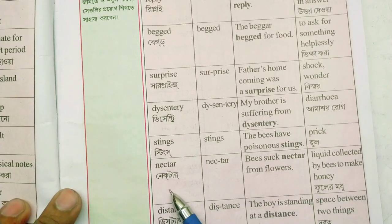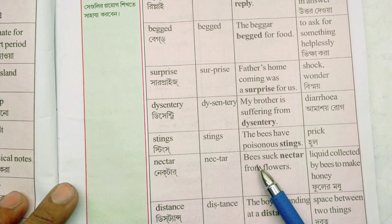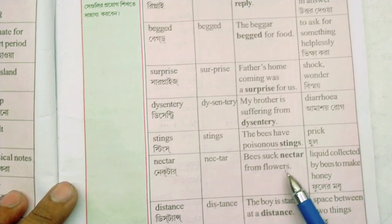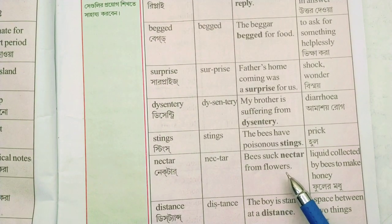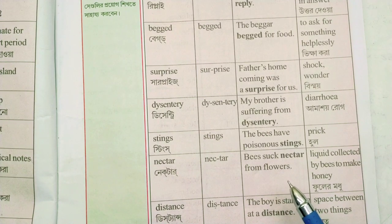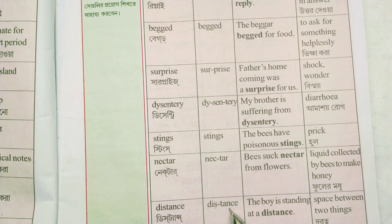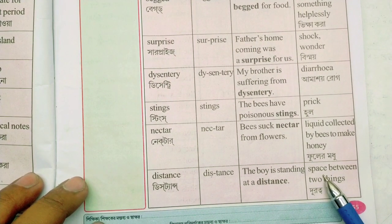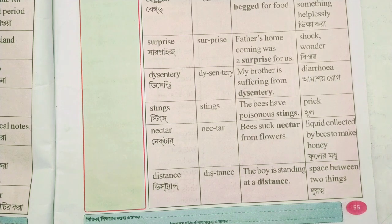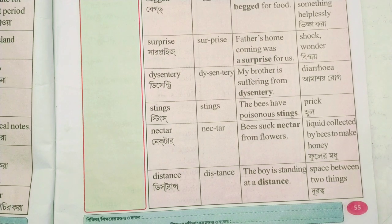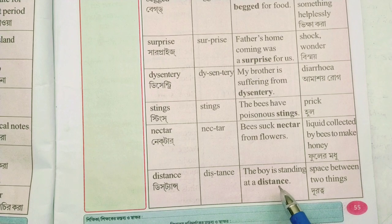Nectar — bees soak nectar from flowers. Chose — nectar — flare — makaranda. The liquid collected by bees to make honey. Distance — distance means the space between two things. The boy is standing at a distance.